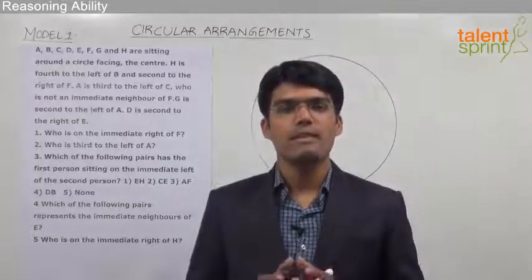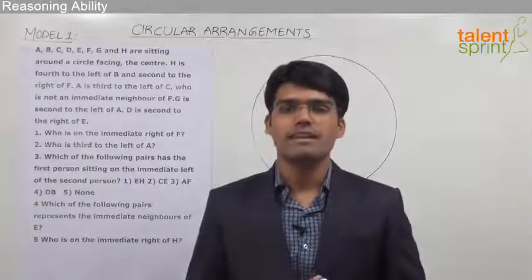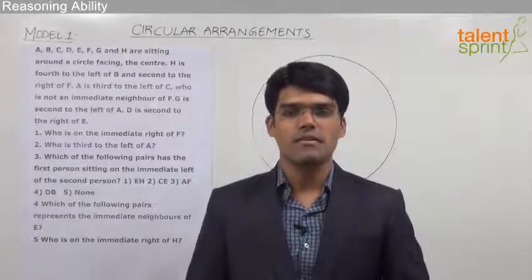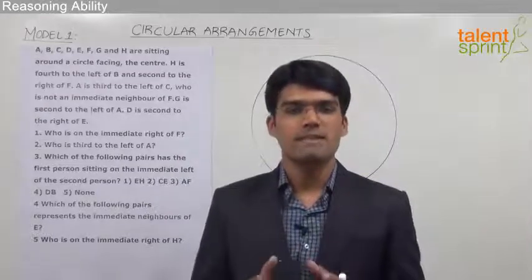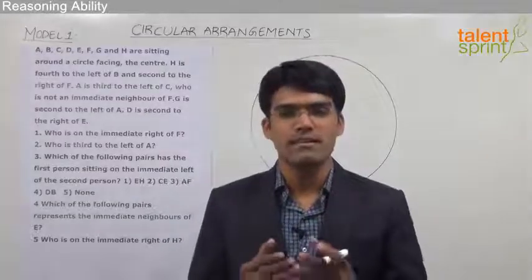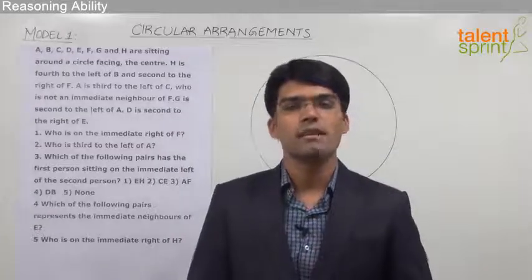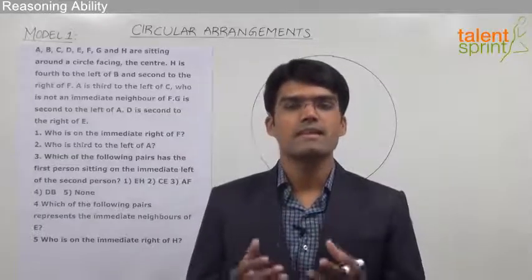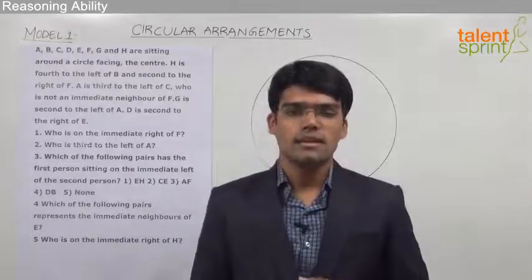Before we take up an example, let us quickly revise the two points that we have just discussed. The first point was regarding the direction sense — the left or right of a person when they are arranged around a circular table. There are two possible cases: either the persons are facing center or they are facing outwards. When the persons are facing center, left should be taken in the clockwise direction and right in the anticlockwise direction. Whereas when the persons are facing outwards, left should be taken in the anticlockwise direction and right in the clockwise direction.